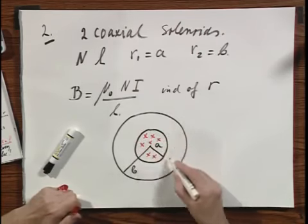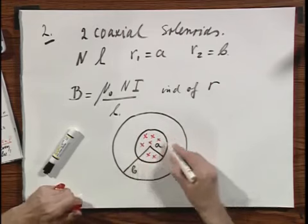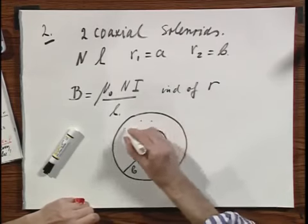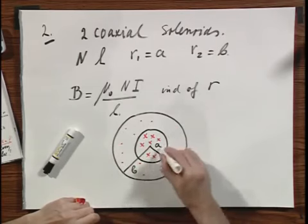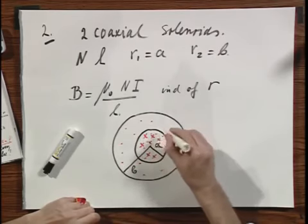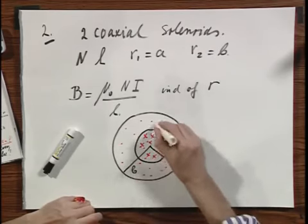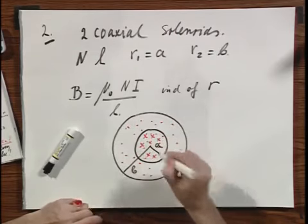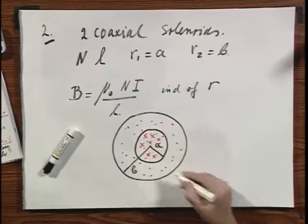The magnetic field in this solenoid with the inside solenoid is pointing inwards, and there is no magnetic field to a good approximation outside the solenoid. And the magnetic field of the solenoid with radius B is everywhere inside at the same strength as the magnetic field inside this inner solenoid.